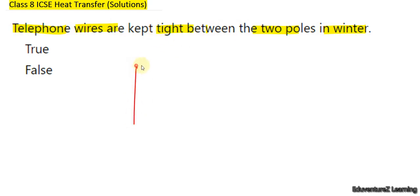Let me explain. Suppose there are two poles. This is pole 1 and another pole is like this here. This one is pole 2 and it is winter time, and the wire is connected between the poles like this.